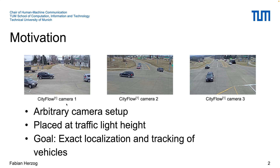The smart city setup we consider consists of several cameras placed at approximately traffic light height in either overlapping or non-overlapping fields of view. The number of cameras can vary from few to many, and our goal is to find the exact localization and to track all the vehicles, pedestrians, bicycles, and other objects to create a scene understanding for smart city applications such as intelligent traffic management, accident prevention, or video surveillance. On the slide, you can see three cameras from the CityFlow dataset, which is one of the only datasets for smart city applications, specifically designed for multi-camera, multi-vehicle tracking.